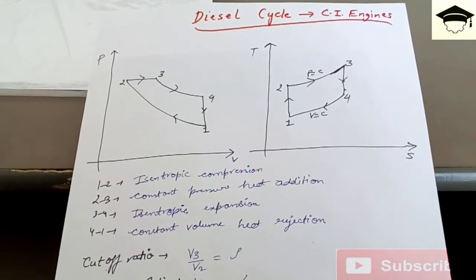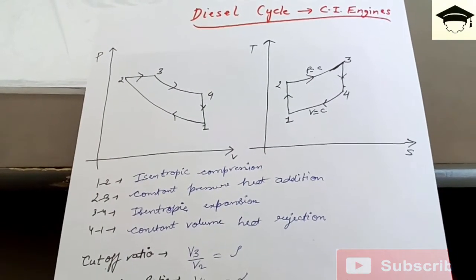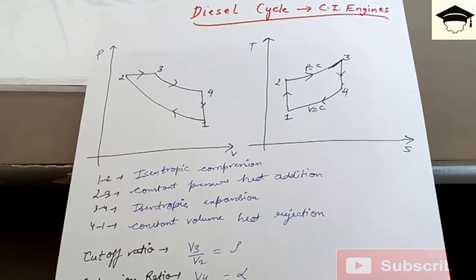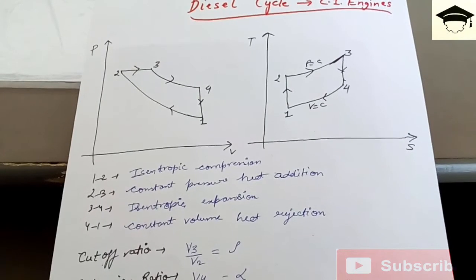The diesel cycle is primarily used in CI or compression ignition engines. The PV diagram and TS diagram - that is pressure-volume and temperature-entropy diagrams - look like this. From 1 to 2 is isentropic compression, 2 to 3 is constant pressure heat addition.